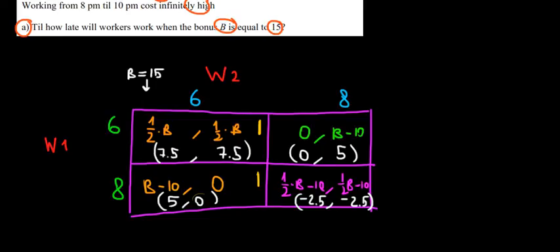We reverse the order. What if the second worker works until 6, what does the first worker choose? He must choose between the first payoff, so 7.5 versus 5. 7.5 is higher, so he would choose this option. What if worker 2 works until 8, what does the first guy do? Again we compare the first payoffs: 0 versus minus 2.5. 0 is better, so he would choose this option. Where is the equilibrium? We have two ticks over here, so that would be the equilibrium. Meaning that both workers work until 6. The bonus of 15 does not make the workers put extra effort.